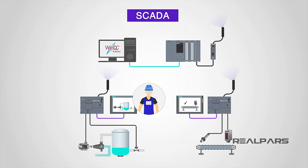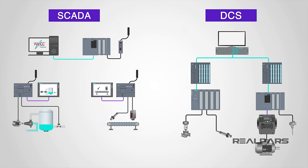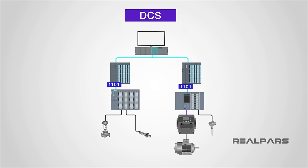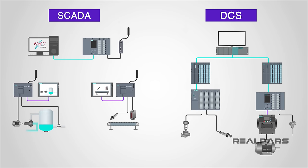A SCADA system is used to gather and present data to operators, make decisions about processes with the aid of operator input, and control plant functions based on those decisions. The DCS's role in plant automation is the same. Since we already know that the roles of both SCADA and DCS systems are essentially the same, let's compare and contrast the mechanisms used to handle those tasks versus the operations themselves.